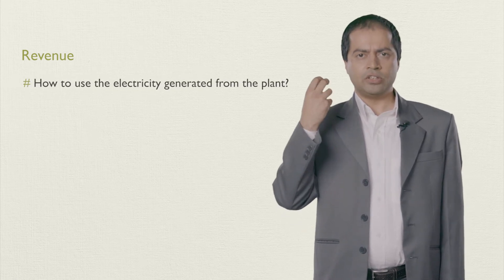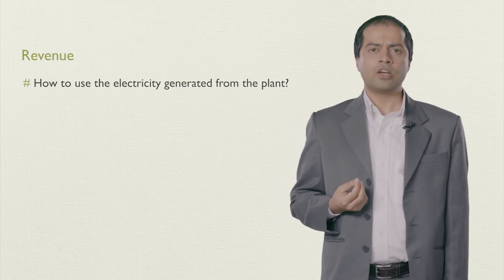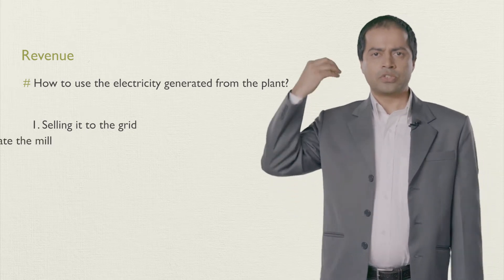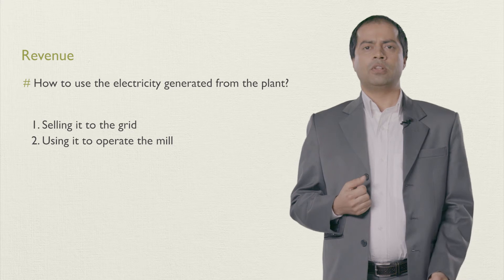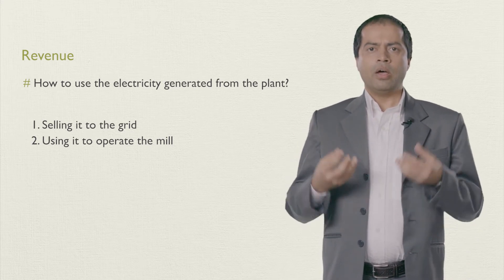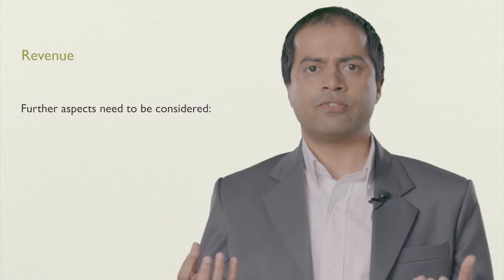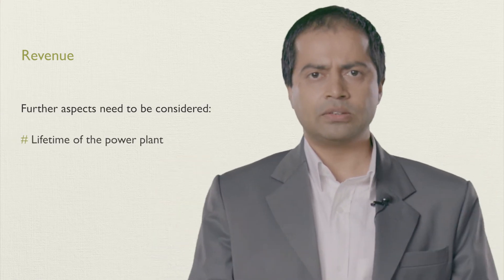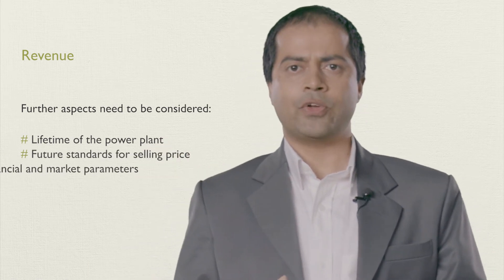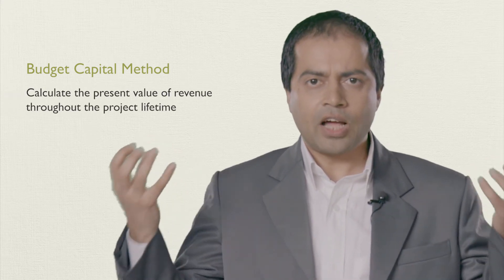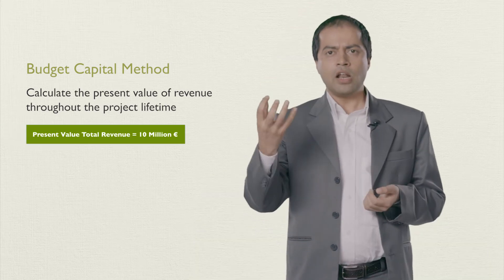Let's talk about the revenue first. The first question is what to do with the electricity generated from the plant. There are two possibilities: selling it to the grid and earning money for the electricity, or using this electricity to operate the mill. Thereby, indirect revenue could be generated equal to the avoided payment for the electricity bill. In both cases, the owner should analyze further aspects such as lifetime of the power plant, future changes in the selling price, as well as other financial and market parameters. By using the capital budgeting method, the present value of total revenue from the project throughout its lifetime can be calculated. Let's say this is 10 million euros.